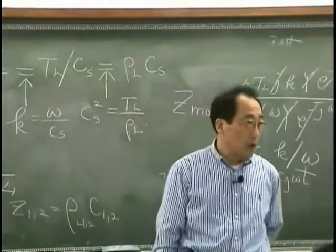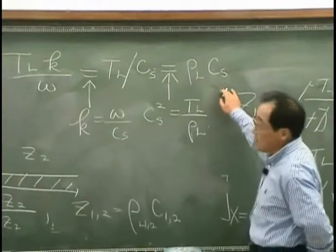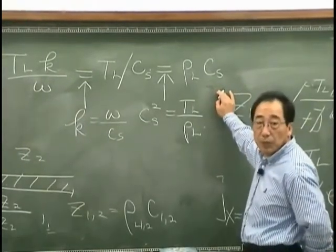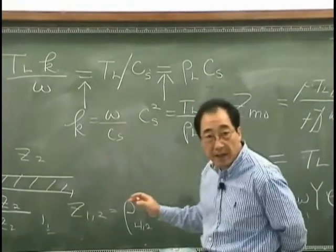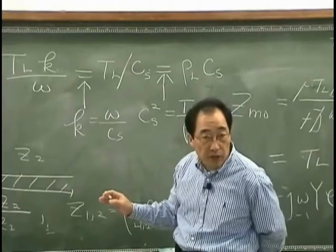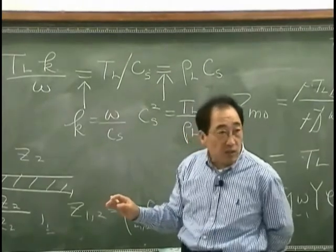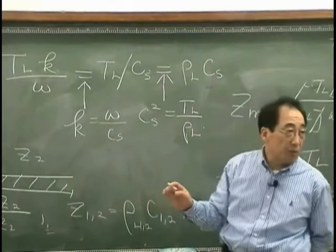So in other words, this means that driving point impedance for semi-infinite string case is the same as the characteristic impedance of a string.